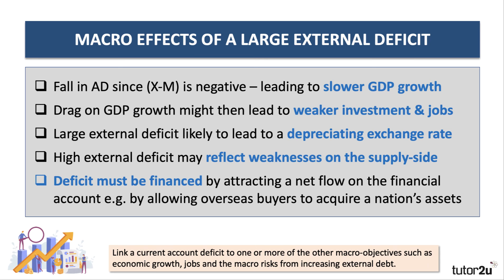So what about the impacts of a current account deficit? First, in pure aggregate demand terms, if you're running a current account deficit, X minus M is negative and that's going to be a drag on GDP growth. If growth is weaker, that could lead to a slowdown in investment and perhaps fewer jobs. A large external deficit, particularly with a floating exchange rate, represents a net leakage of demand from the circular flow and a net outflow of currency, which should in theory lead to a depreciating exchange rate.